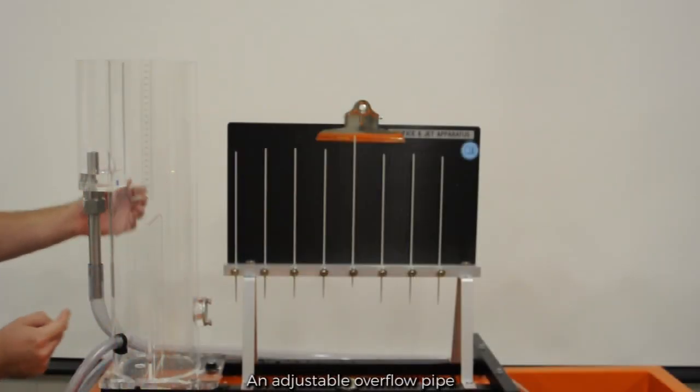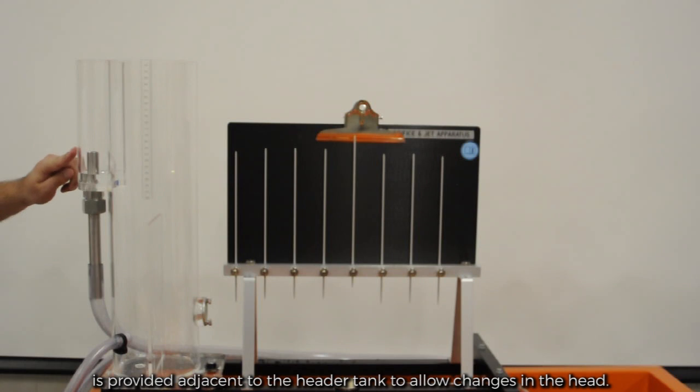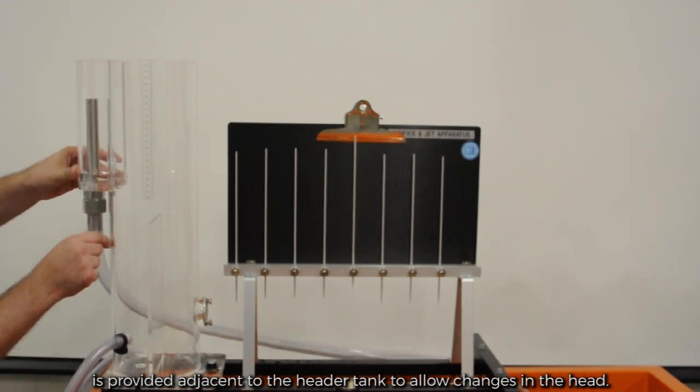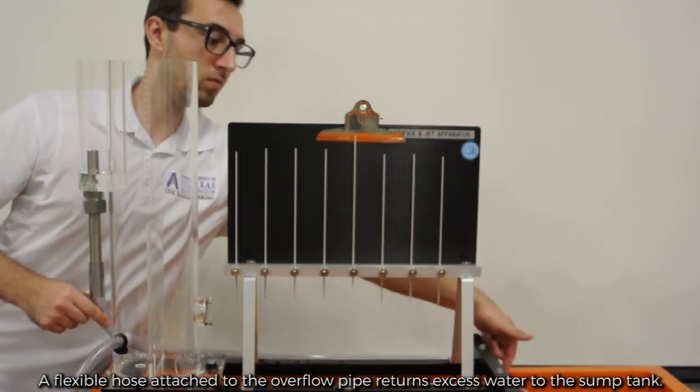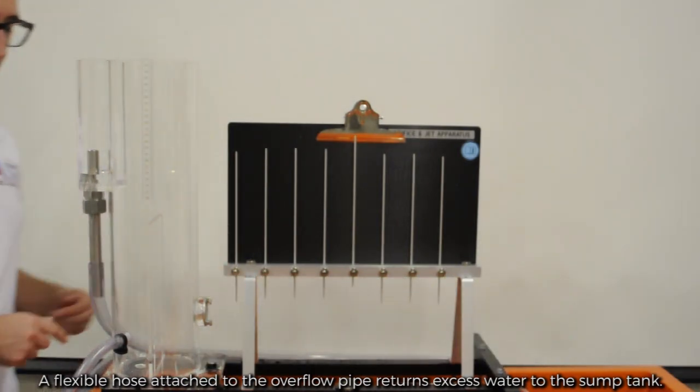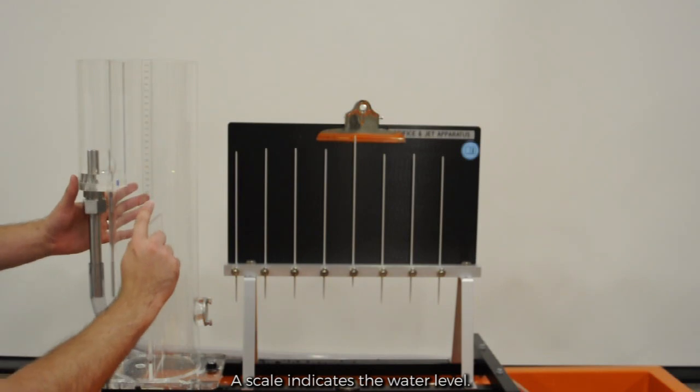An adjustable overflow pipe is provided adjacent to the header tank to allow changes in the head. A flexible hose attached to the overflow pipe returns excess water to the sump tank. A scale indicates the water level.